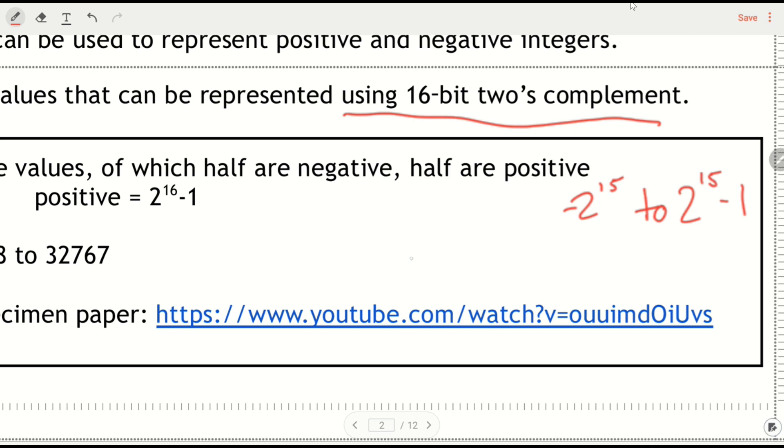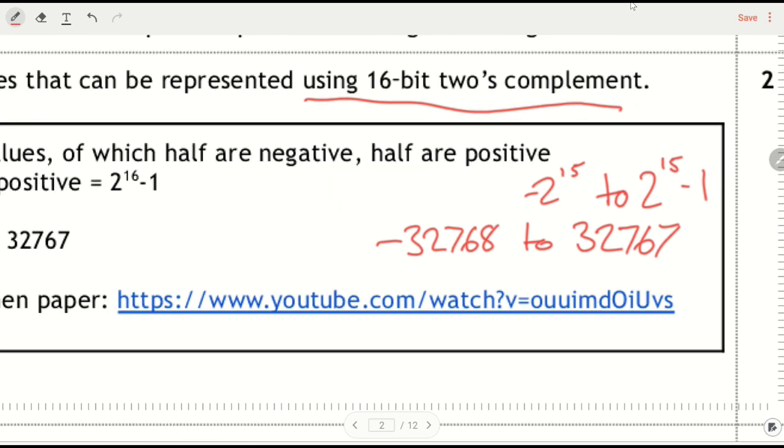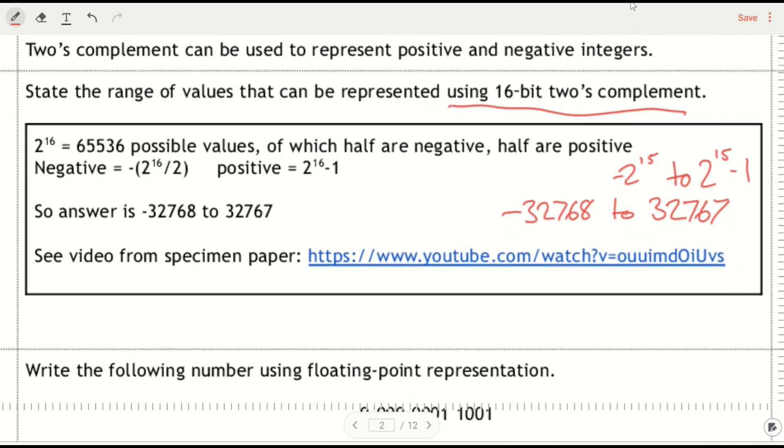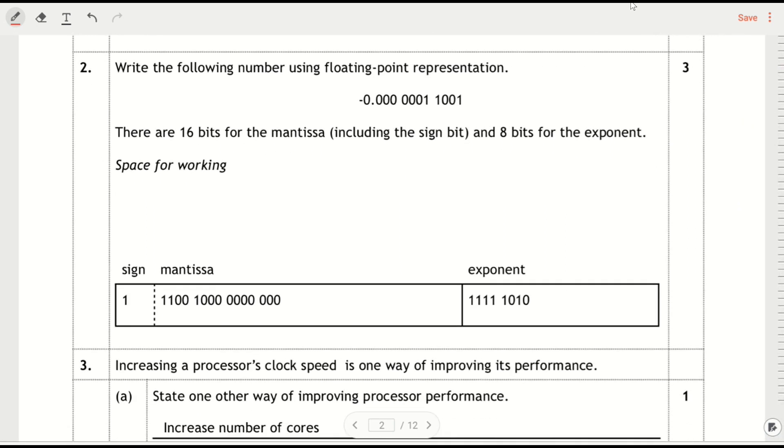So that way I've got negative 32,768 to 32,767. And that gives me my 65,000 and whatever values to play with, which is 2 to the power of 16. There's another video that's on that and I'll give you notes on it as well.